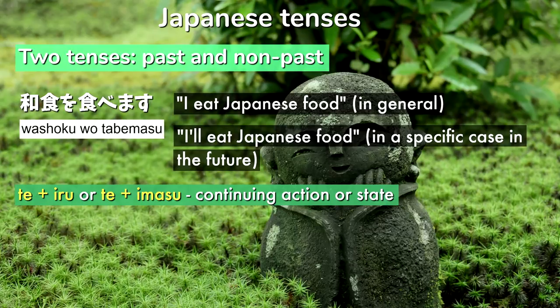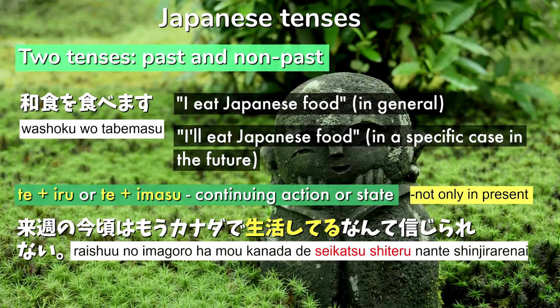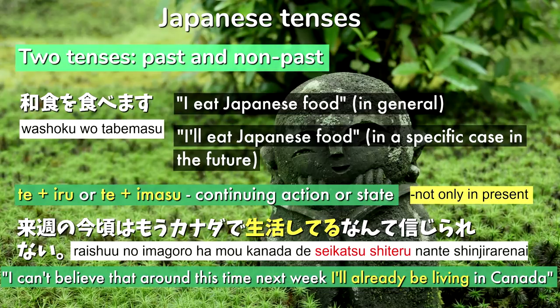People often think this is strictly a present tense form, but it can also be used for future actions. For example, this sentence means, I can't believe that around this time next week, I'll already be living in Canada. Here you can see that the verb, seikatsu shite iru, is in the te iru form, representing progressive aspect, but the action takes place in the future.